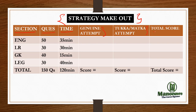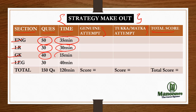We have 4 sections: English, LR (Logical Reasoning), GK, and Legal. English has 50 questions, which is the dominating section — 35 minutes is sufficient for this section. LR has 30 questions — 30 minutes is sufficient; some people can complete it in 25 minutes. GK has 40 questions and can be completed in 15 minutes. Legal has 30 questions and 40 minutes is sufficient, because in Legal you have to read the data so you need a bit more time compared to the other sections.